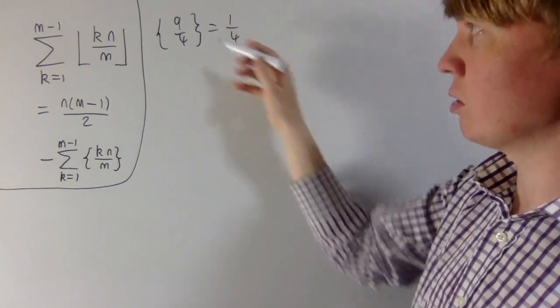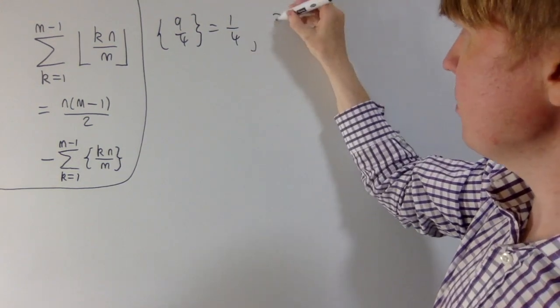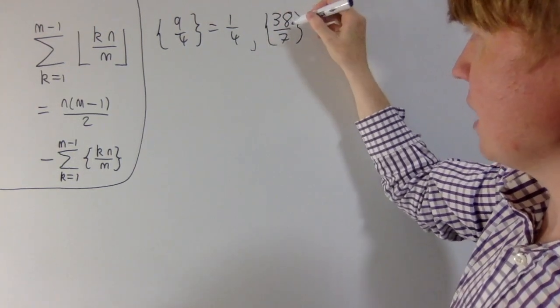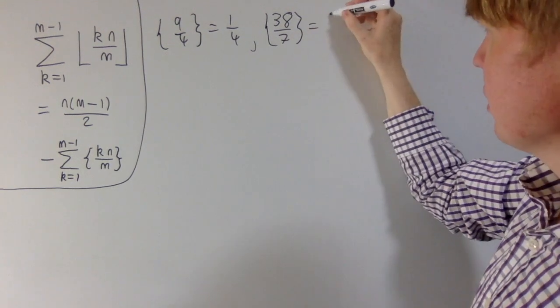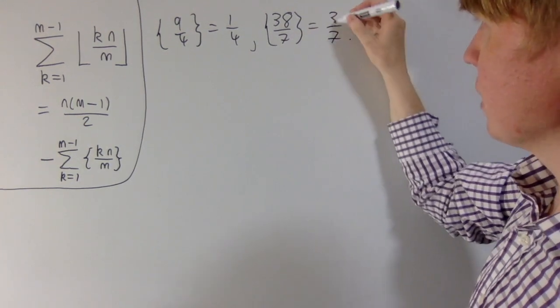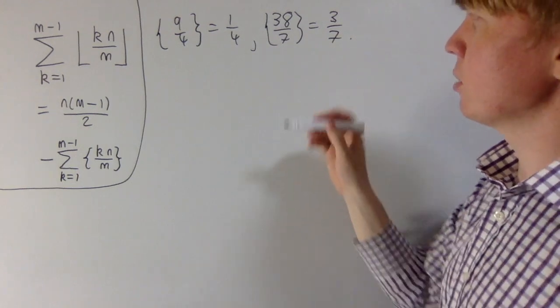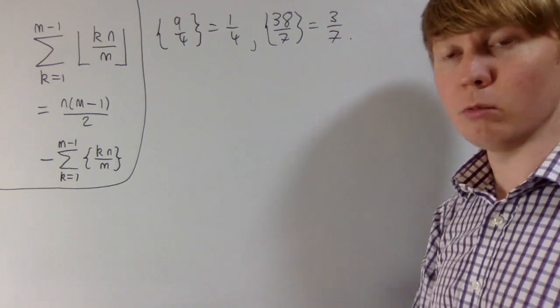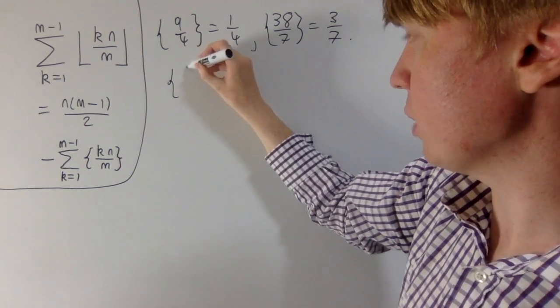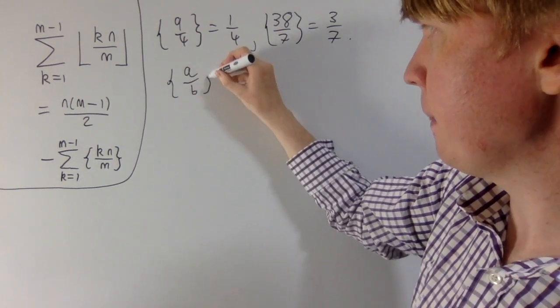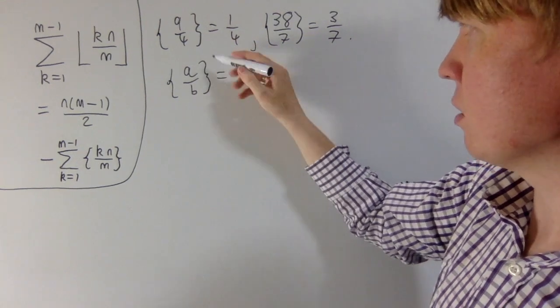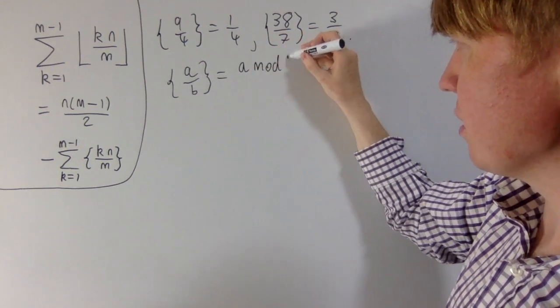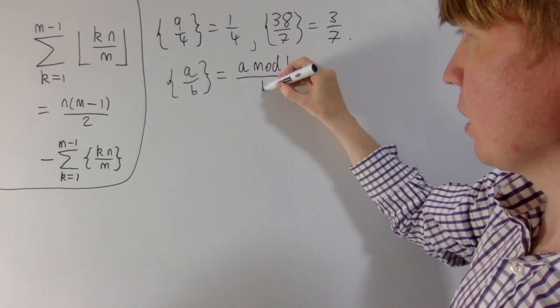So on the top, you put the remainder when you divide 9 by 4. Similarly, if you had something like 38 over 7, you divide 38 by 7, you get 5 remainder 3, and our fractional part of this becomes 3 over 7. So the pattern we're seeing is, let's say we've got the fractional part of a over b. We can write this as the remainder when you divide a by b, which more rigorously you can write as a mod b, all divided by b.